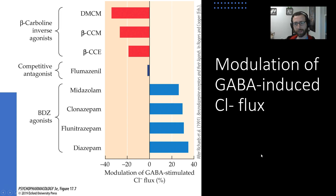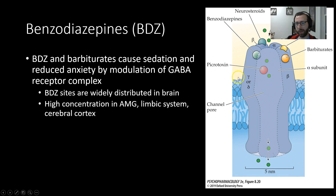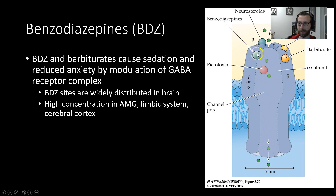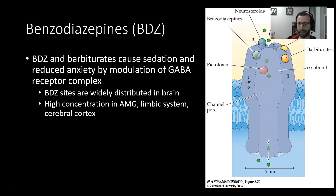Benzodiazepine-class drugs are positive allosteric modulators of chloride-containing GABA receptors. The benzo-binding site is shown here in this diagram — it is not the principal binding site, meaning benzos act as non-competitive agonists. GABA binds at its own site, and if GABA binds in the presence of a benzo-class drug, there is enhanced chloride conductance — more chloride moves through the channel and hyperpolarizes that neuron. Chloride is a negatively charged ion, so when it passes into the cell, it hyperpolarizes it, inhibits it, and makes it less likely to fire.